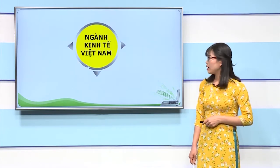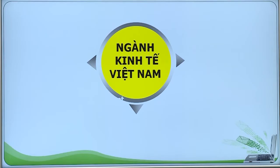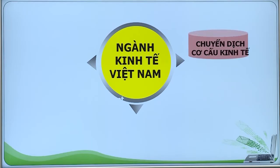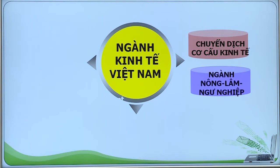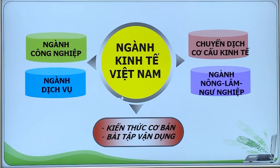Chuyên đề ôn tập của chúng ta ngày hôm nay là chuyên đề ngành kinh tế Việt Nam, gồm có 4 nội dung: chuyển dịch cơ cấu kinh tế, ngành nông, lâm, ngư nghiệp, ngành công nghiệp và ngành dịch vụ. Với mỗi nội dung này, chúng ta sẽ lần lượt đi hệ thống những kiến thức cơ bản, từ đó vận dụng trả lời các câu hỏi trắc nghiệm để củng cố kiến thức.